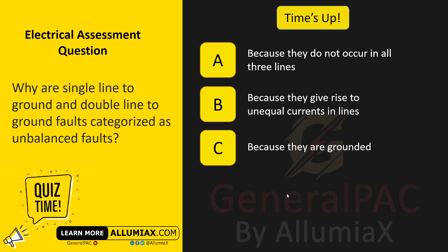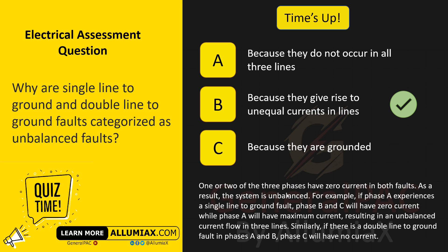The answer is B — because they give rise to unequal currents in lines. One or two of the three phases have zero current in both faults, so the system is unbalanced. For example, if phase A experiences a single-line-to-ground fault, phases B and C will have zero current while phase A will have maximum current, resulting in an unbalanced current flow. Similarly, if there is a double-line-to-ground fault in phases A and B, phase C will have no current.